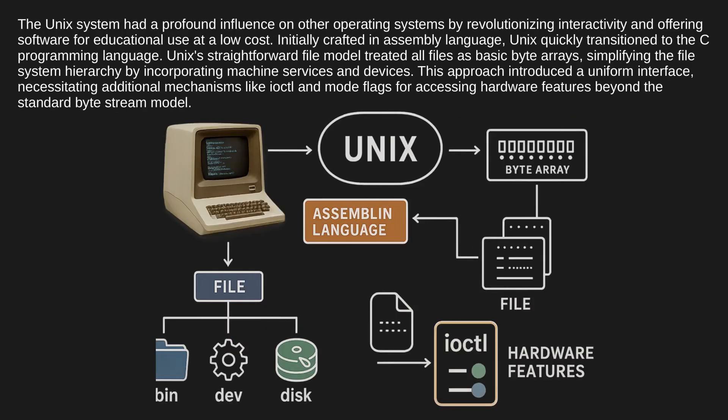The Unix system had a profound influence on other operating systems by revolutionizing interactivity and offering software for educational use at low cost. Initially crafted in assembly language, Unix quickly transitioned to the C programming language. Unix's straightforward file model treated all files as basic byte arrays, simplifying the file system hierarchy by incorporating machine services and devices, introducing a uniform interface with additional mechanisms like ioctl and mode flags for accessing hardware features beyond the standard byte stream model.